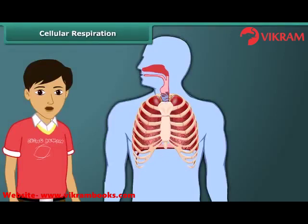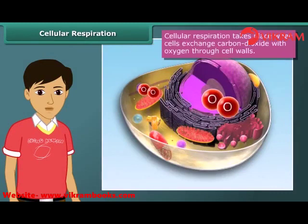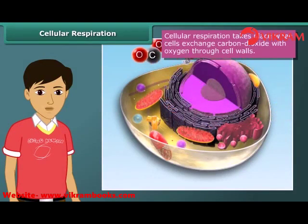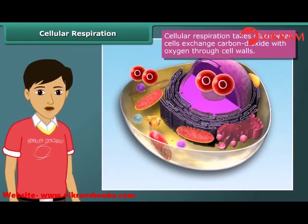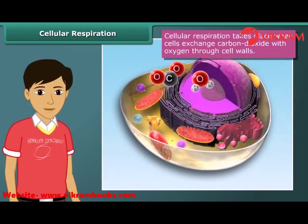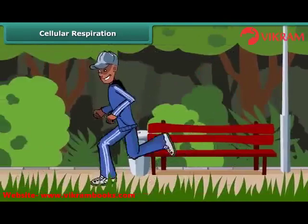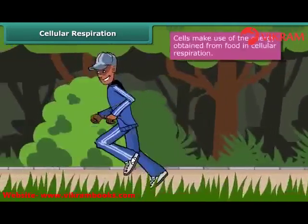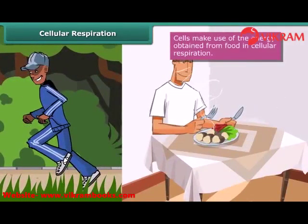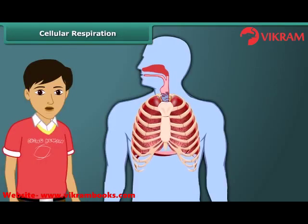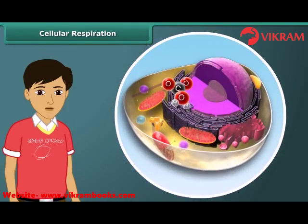We will now look at internal or cellular respiration. In this process, cells present inside the human body exchange unwanted carbon dioxide with the essential oxygen through cell walls. Our body needs energy to perform various activities. The energy is produced when the food we eat is broken down into glucose. Breakdown of food requires oxygen obtained through inhalation. Thus, cellular respiration is the process by which cells make use of the energy obtained from food.